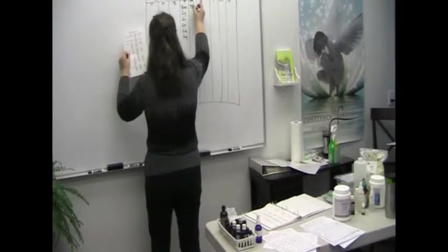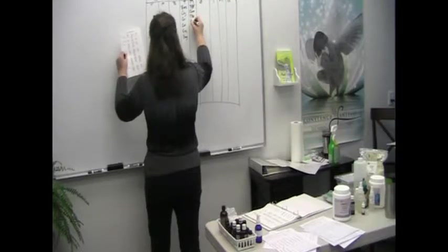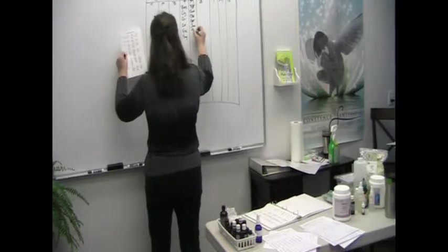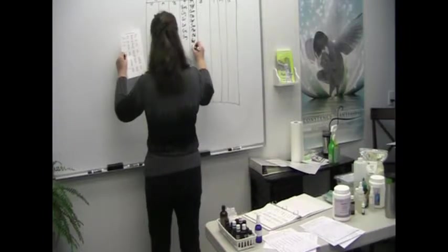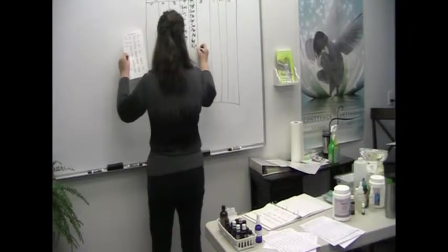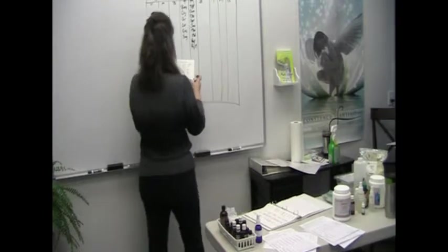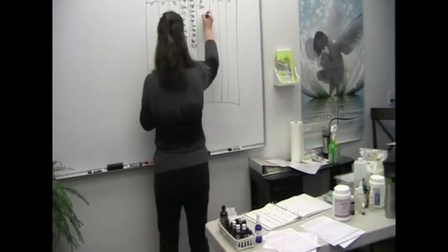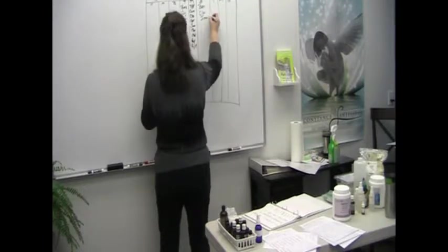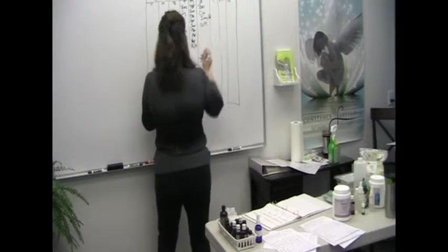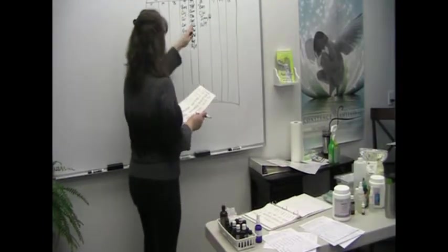For middle notes we have black pepper, camphor, chamomile, geranium, juniper, marjoram, melissa, peppermint, and rosemary. For base we have benzoin, clove, immortelle which is also considered helichrysum, and nutmeg. That's for aches and pains.